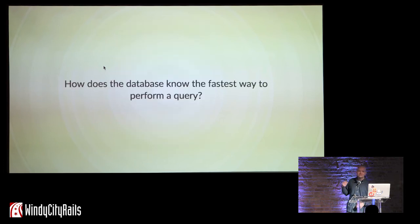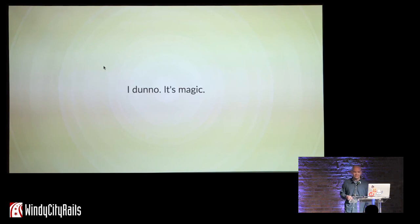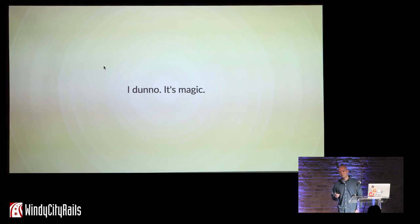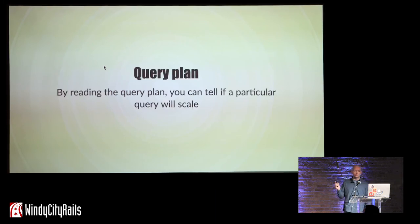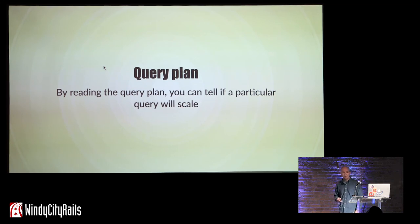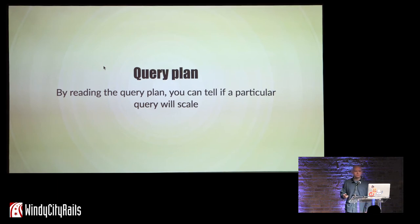How does the database know the fastest way to perform a query? The answer is: I have no idea — it's totally magic. But as an artifact of this process, it produces a thing called a query plan. And a query plan is useful because by reading it, you can tell if a particular query is going to scale or not.